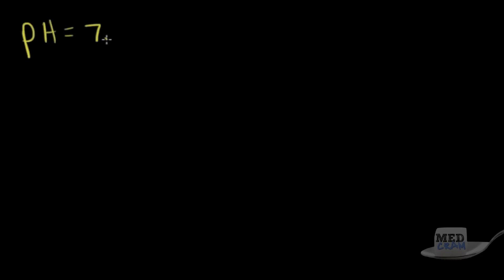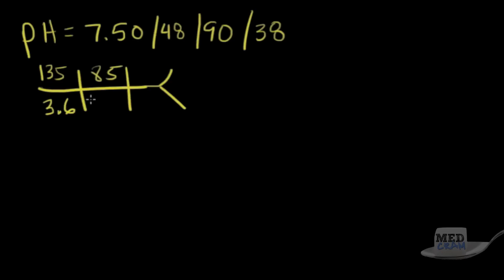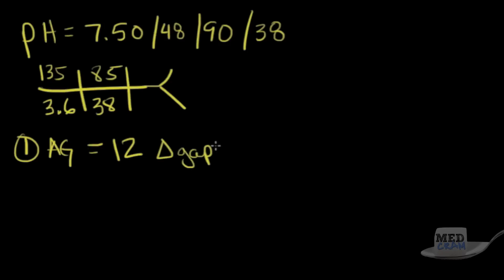Next question: pH is 7.50, pCO2 is 48, O2 is 90, bicarb is 38. The CHEM7 shows sodium 135, potassium 3.6, chloride 85, bicarb 38. First step — calculate the anion gap: 85 plus 38 is 123; 135 minus 123 equals 12. The anion gap is 12 and the delta gap is 0, so there is no anion gap metabolic acidosis.